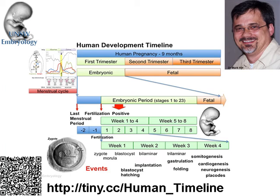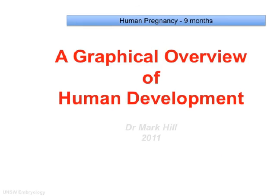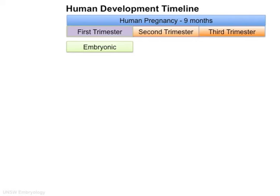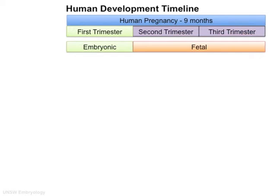Let's look at the overview of human development. Human pregnancy occurs over a nine-month period of time. This is divided into three trimesters, each of three months long. The first trimester is mainly the embryonic period, while the second and third trimesters is the fetal period of growth.